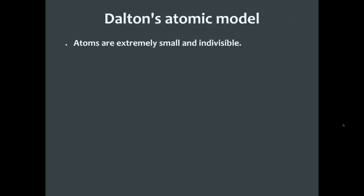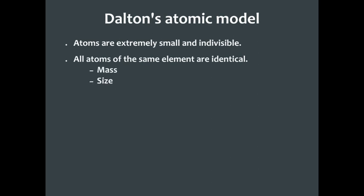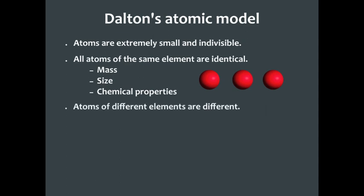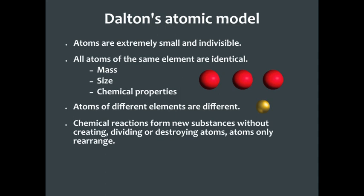Starting with Dalton's atomic model: he said that atoms are very, very small and cannot be divided. He said that all atoms of the same element are identical — identical in mass, in size, in chemical properties, and so on. They would look exactly alike in terms of mass, size, and how they behave. His next statement says that atoms of different elements are different. So if I have two different atoms of two different elements, they will look different and have different properties. Lastly, chemical reactions form new substances without creating, dividing, or destroying atoms.